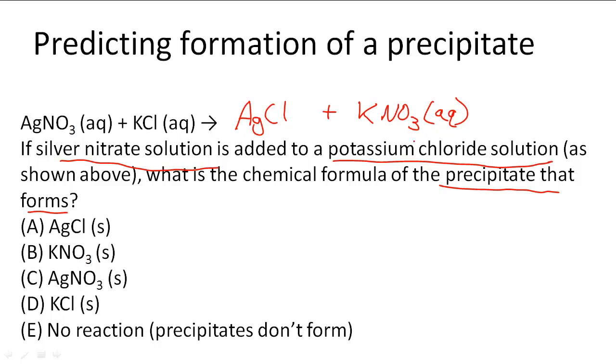So KNO3 is going to be aqueous, so we know that B is wrong and we also know that D and C are wrong because they are both referring to these, which we know are aqueous solutions and they're not the correct products for this reaction.